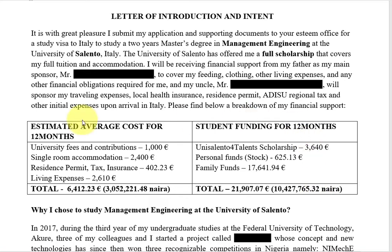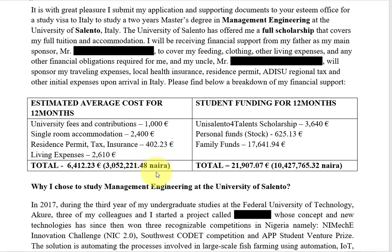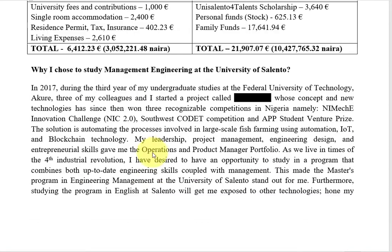I know some people might ask why I wrote 12 months instead of 24 months when my program is two years. It's obvious that if you multiply by two it will still cover everything. However, my family's funding shows that these people are pensioners and they receive pension monthly, so obviously the second year will still be covered — this is not a fixed one-time amount. Just have a summary table so that at first glance the reviewer can confirm that you have your proof of funds and it can cover your expenses. This tip was given to me by one of our senior colleagues.